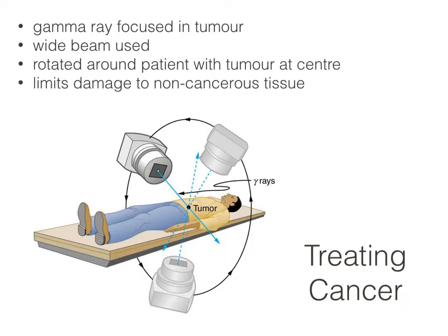How do we use gamma rays in medicine? We can use them to help treat cancer. Gamma rays are focused on a tumour, and because they damage living cells, they can damage the tumour. To avoid damaging healthy cells, a wide beam is rotated around the patient, ensuring it's always aimed at the tumour. This means the non-cancerous healthy tissue only receives a small proportion of the gamma radiation, as shown in the diagram.